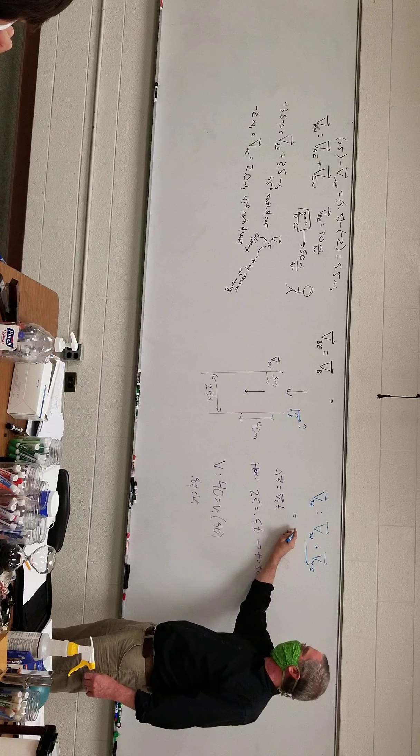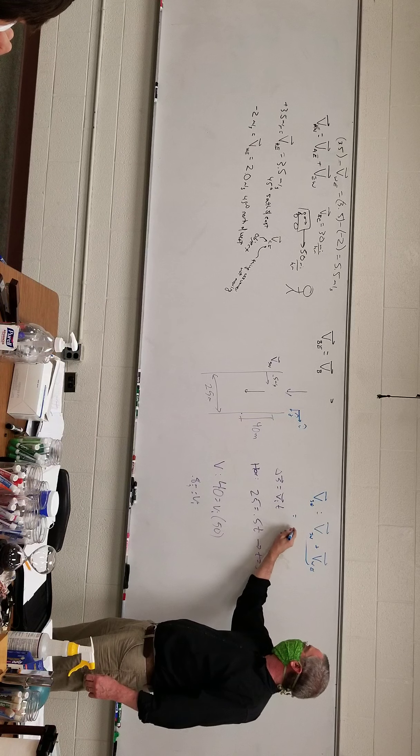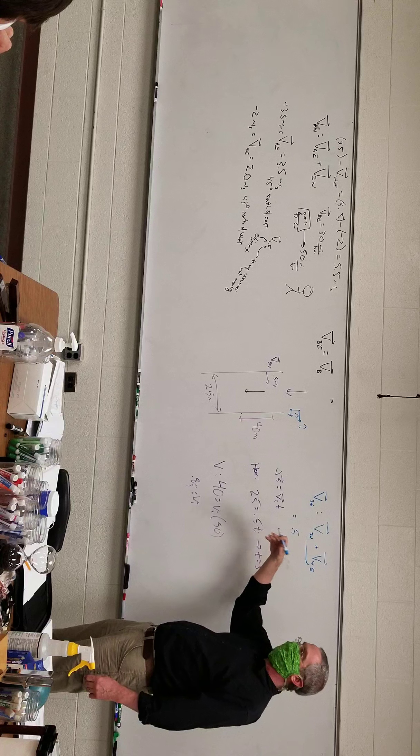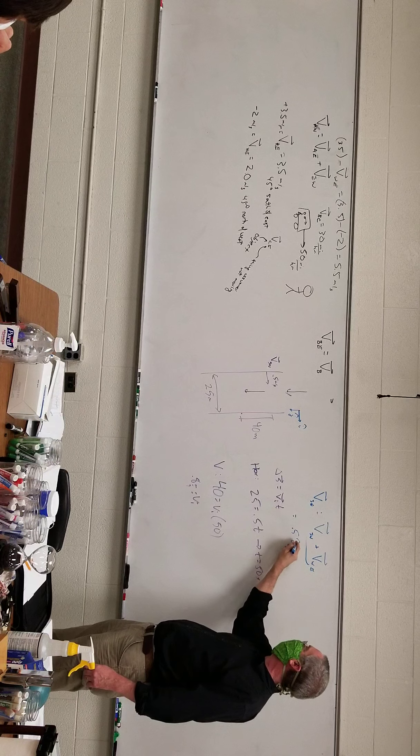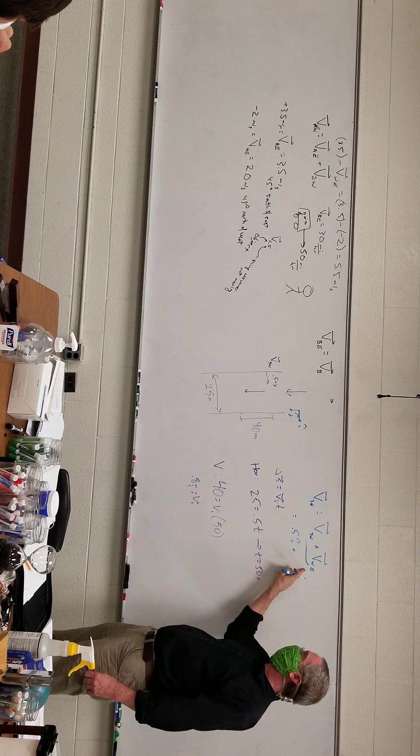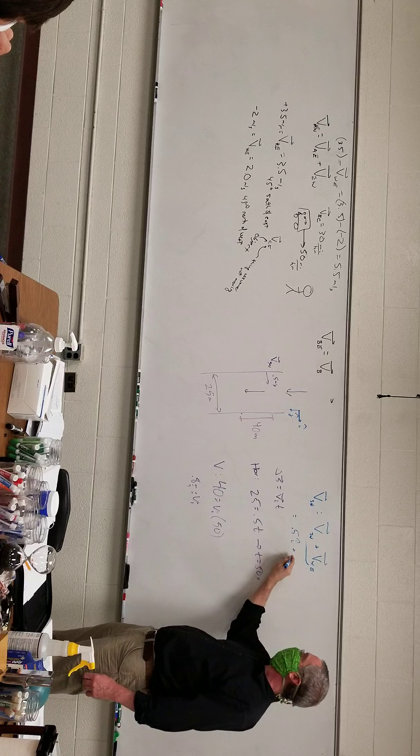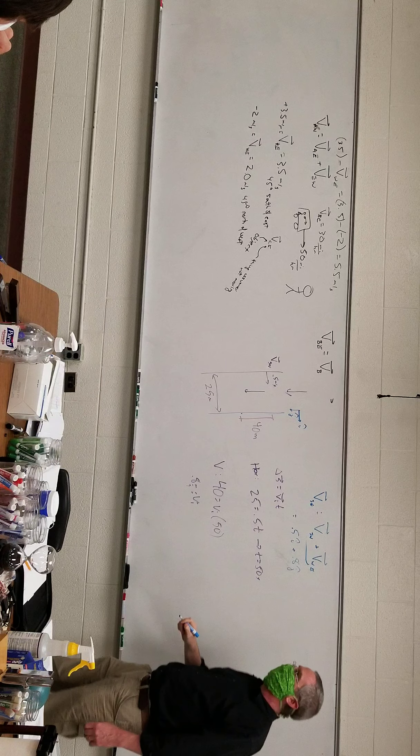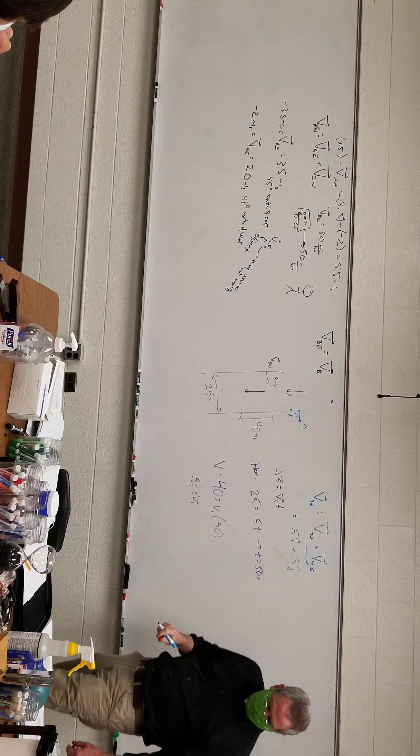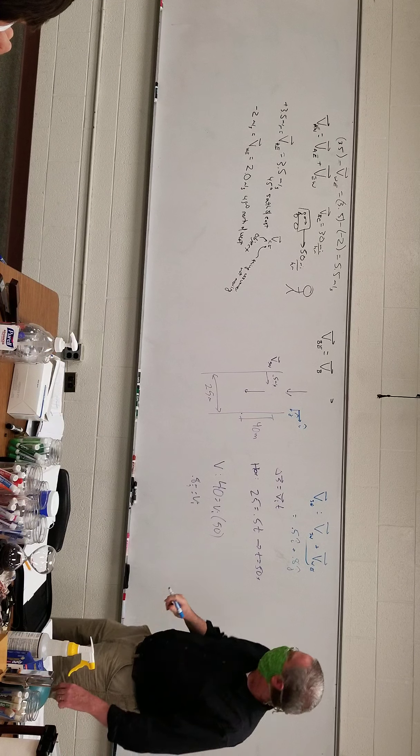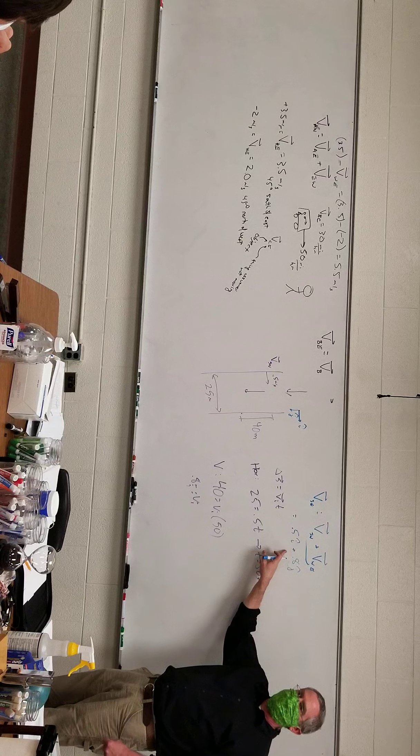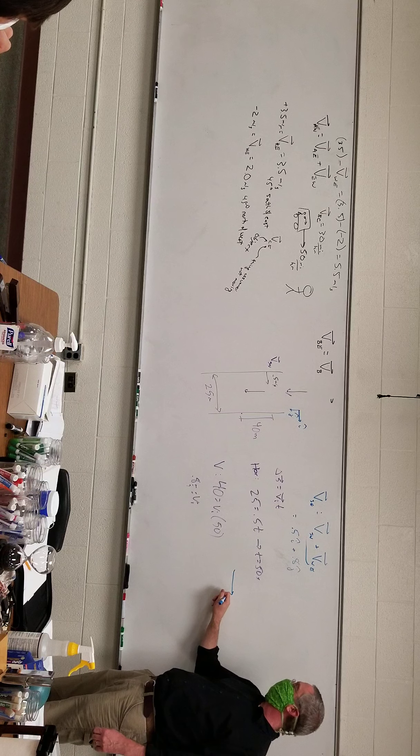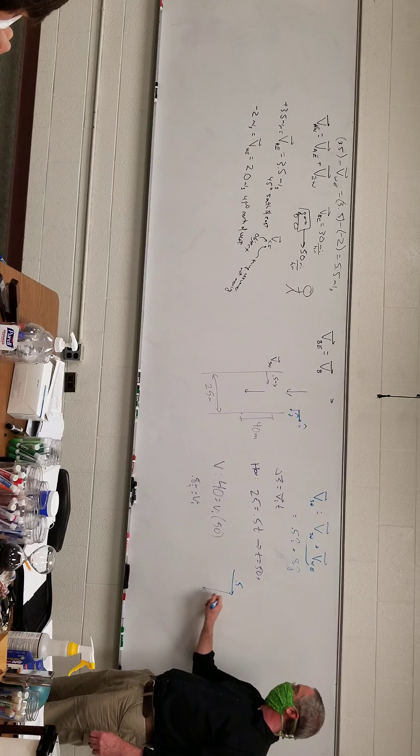So this would be, swimmer with respect to the water, that's 0.5 meters per second i hat, plus water with respect to the earth is 0.8 j hat. And it's asking for, I think, speed. Yes. Well this is velocity. Speed we're finding the magnitude: 0.5, 0.8.